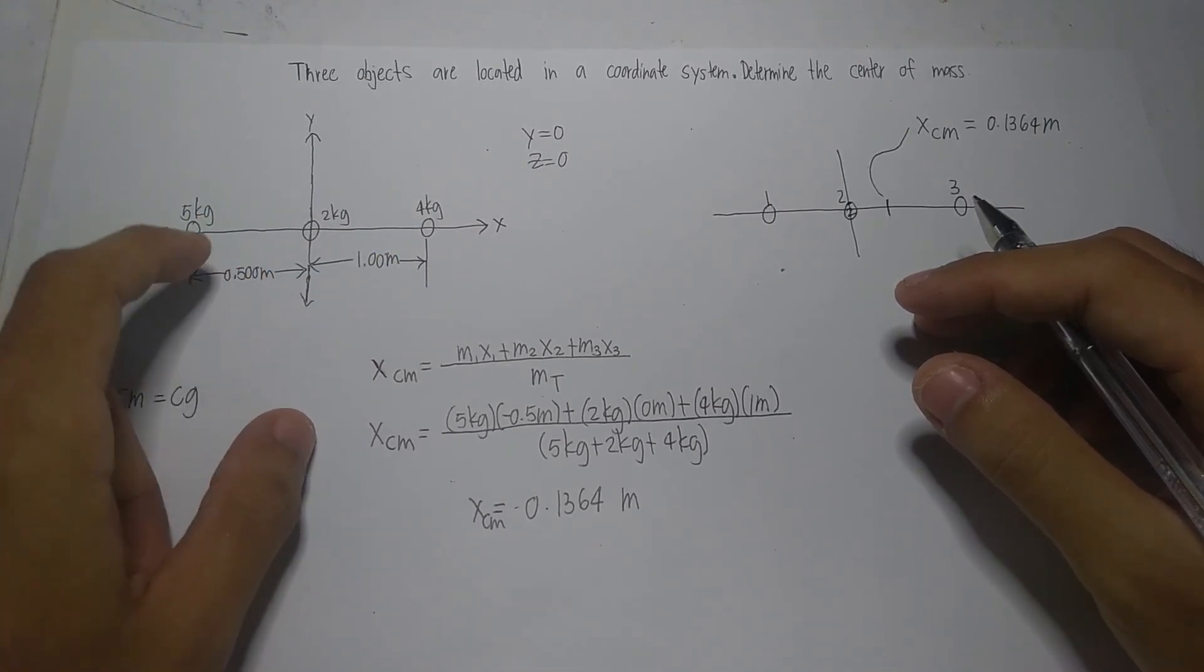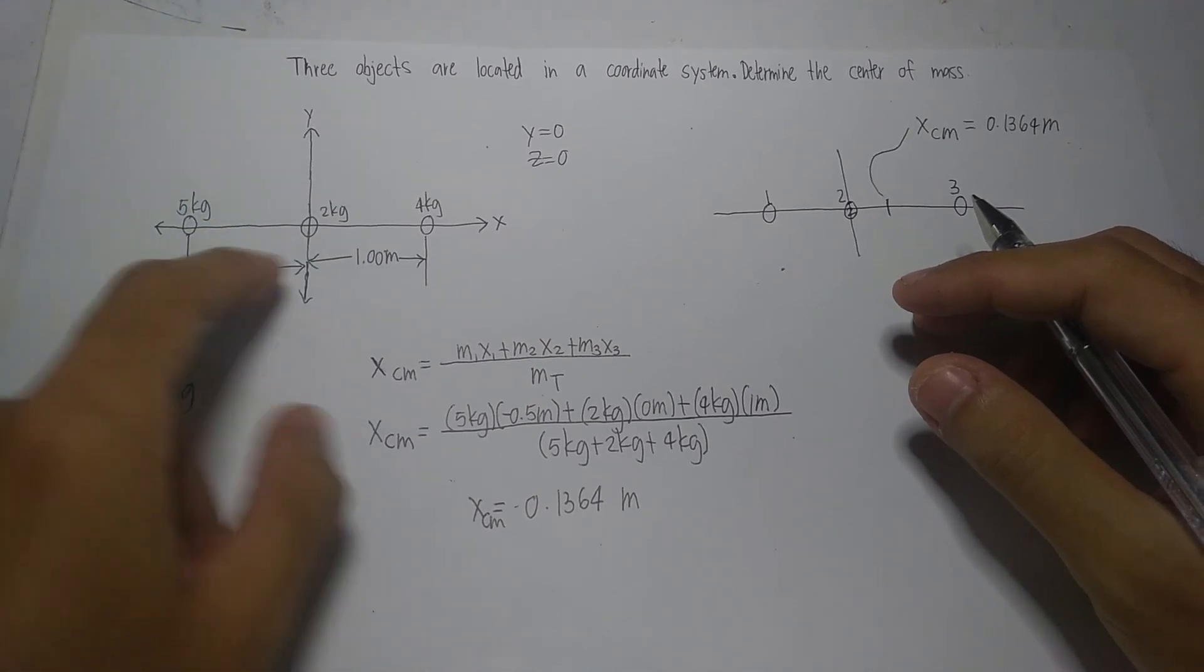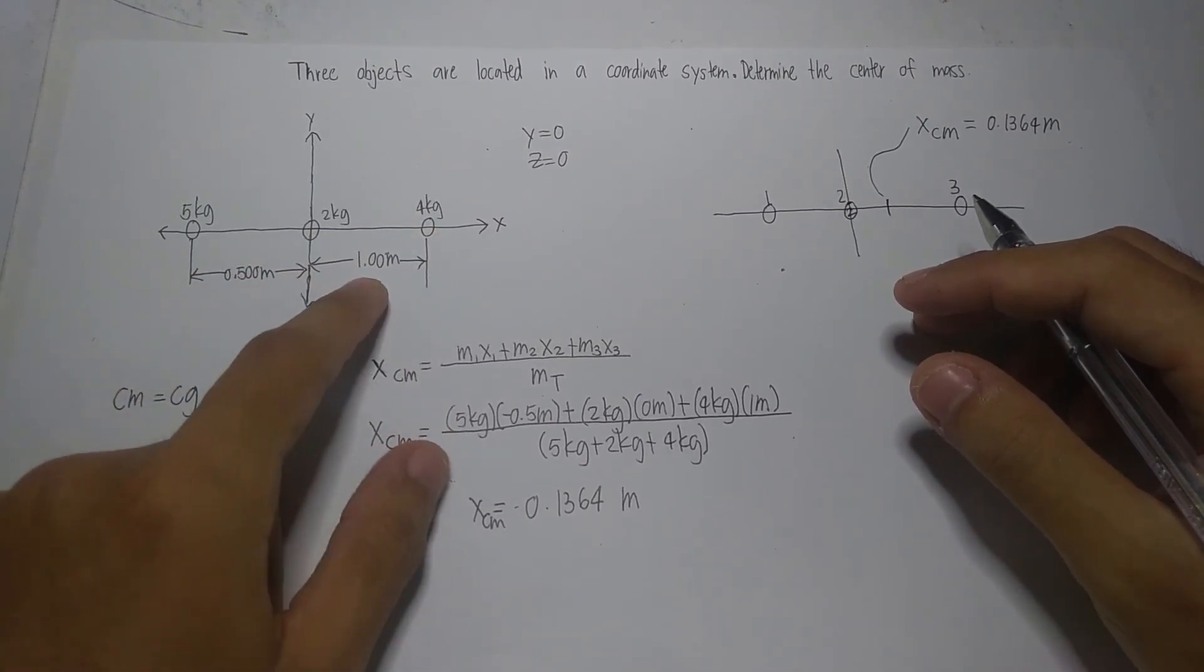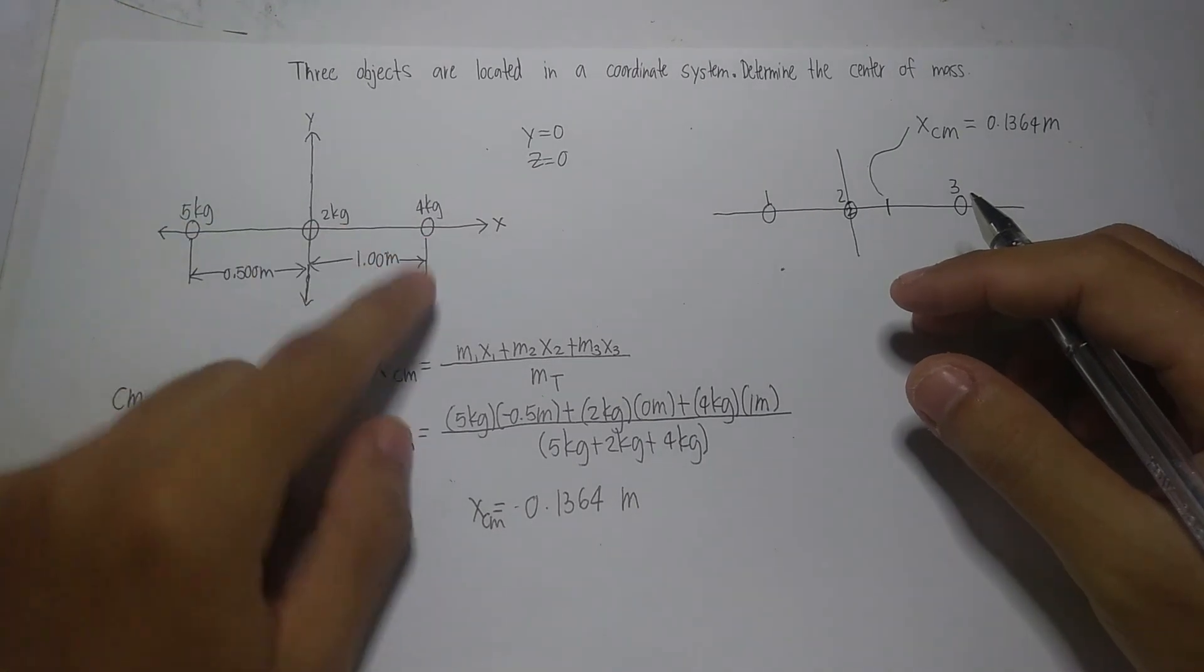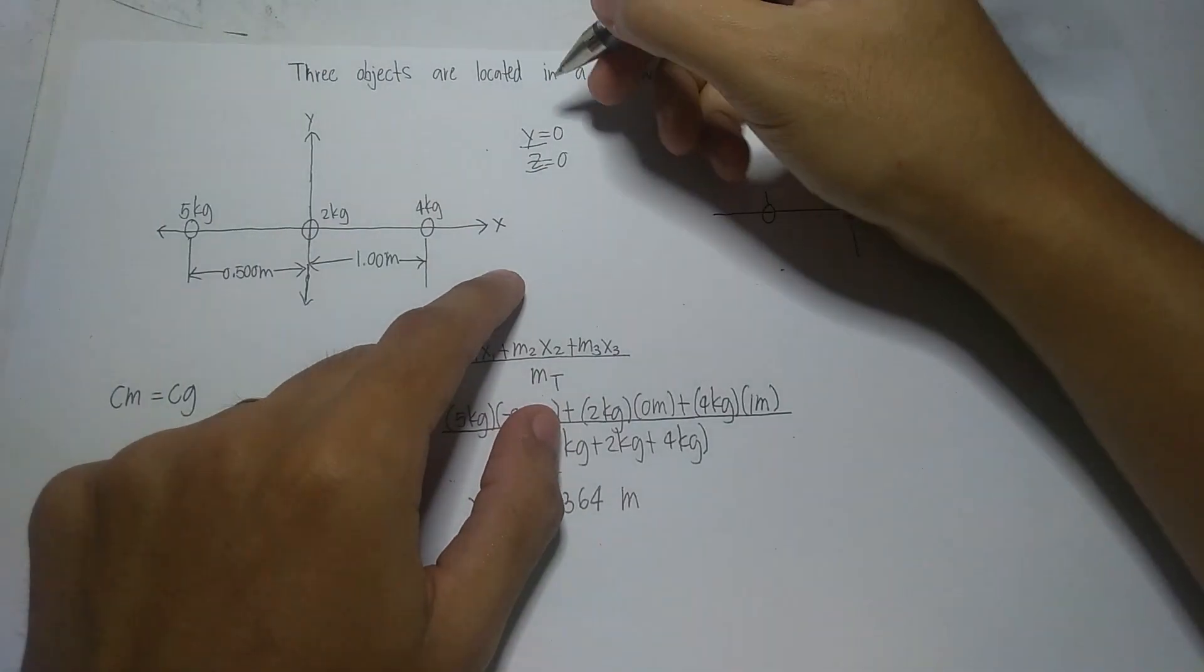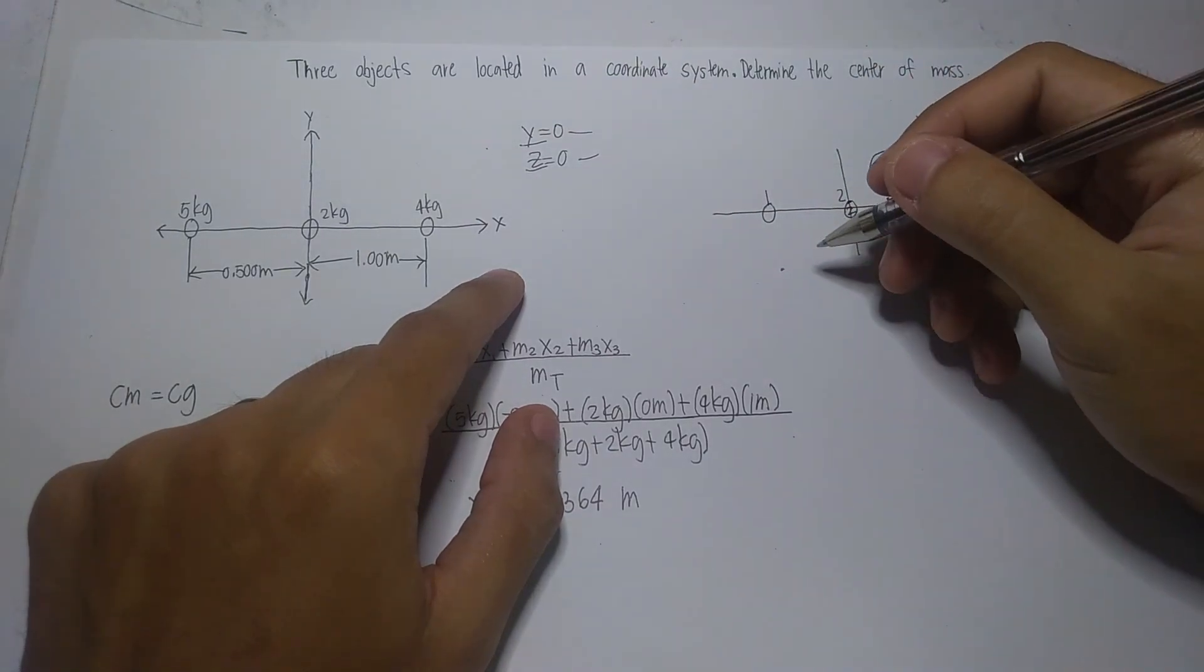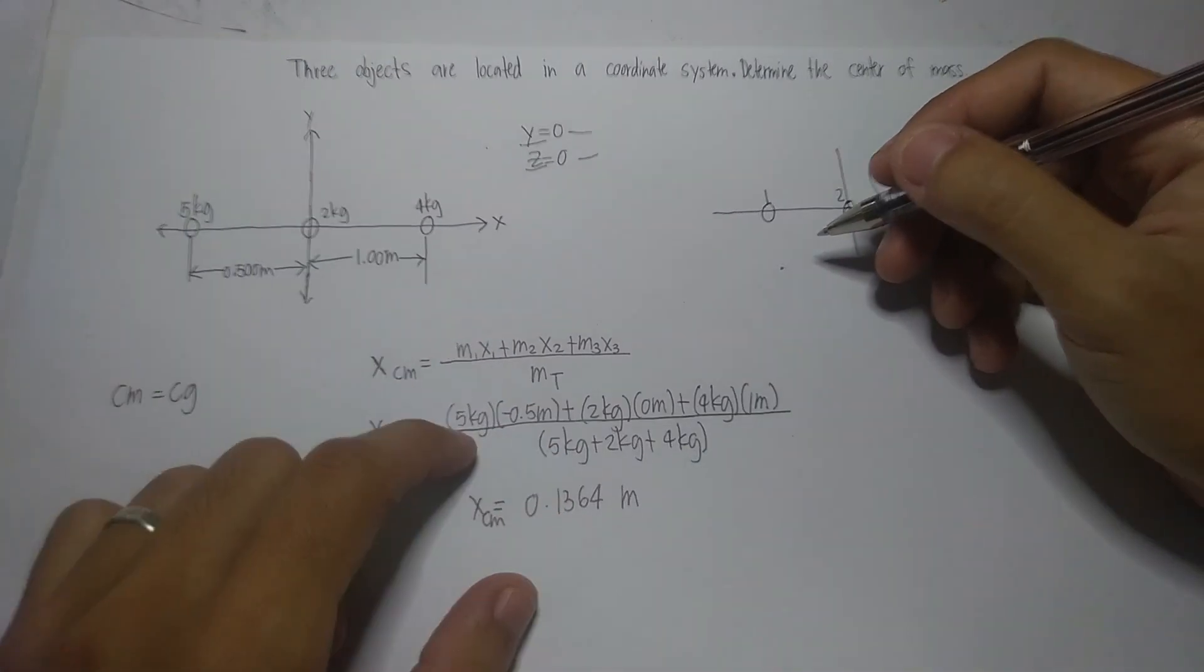The distance between object 1 and object 2 is 0.5 meters and the distance between object 3 and object 2 is 1 meter. We should also take note that the three objects are situated in the x-axis, which means that the y and z-axis will have a value of 0. Therefore they are insignificant in solving this problem because we will just deal with the x-axis.